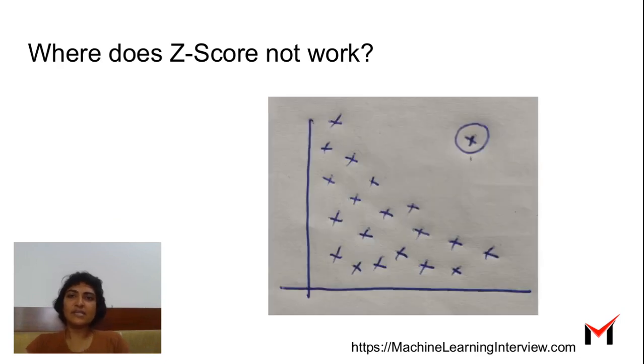Another place where the simple one-dimensional z-score does not work is if you have an outlier in the multidimensional sense. If we take this example, we can see an outlier here very clearly. But if you take the x-coordinate, if you project it on the x-axis, the x-coordinate is not really an outlier by itself, because there are many points around it here. It has a pretty typical y-coordinate, it looks like. But when you look at them together, you see that this is clearly an outlier. And this simple one-dimensional z-score cannot find these outliers.